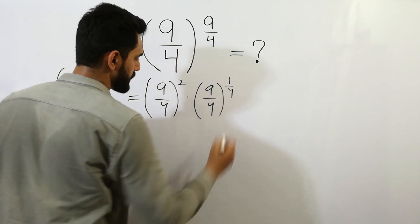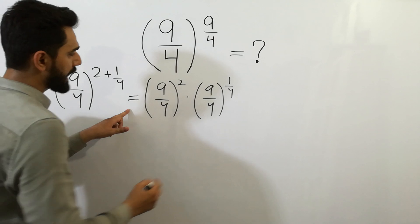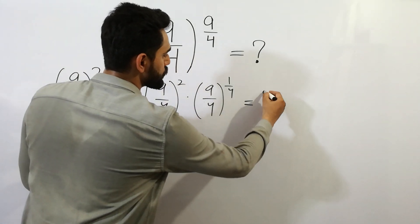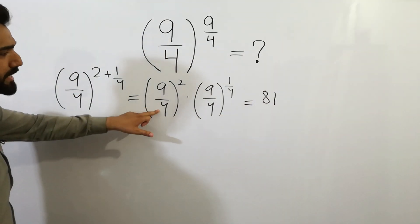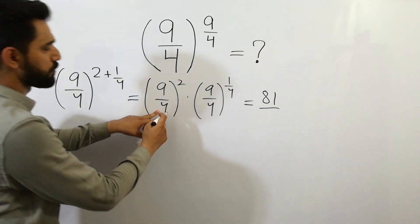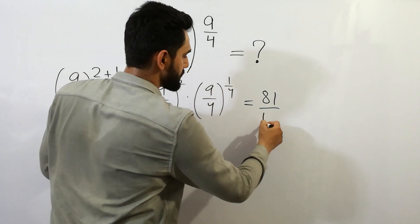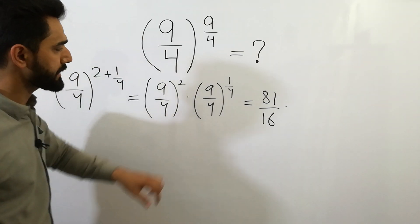Clear? 9 squared is equal to 81, divided by 4 squared is equal to 16. Clear? Next,